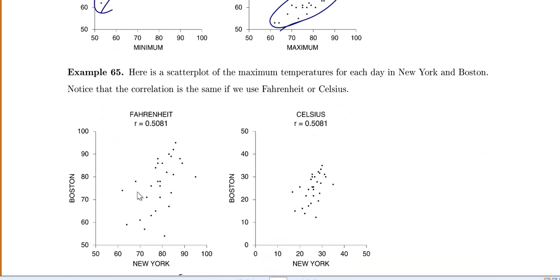In our next example we have a scatter plot of the maximum temperatures for each day in New York and Boston. Notice now we're keeping the x and y values the same but we're changing from Fahrenheit to Celsius.